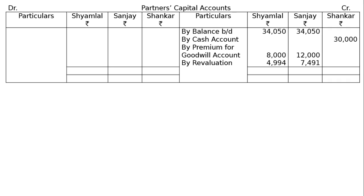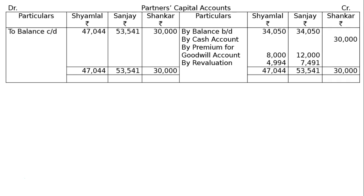Total the credit side, then transfer the same to the debit side as balance carried down. The closing capital balances are: Samlal Rs. 47,044; Sanjay Rs. 53,541; Sankar Rs. 30,000.